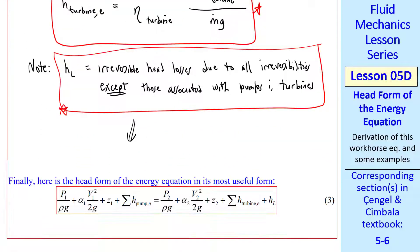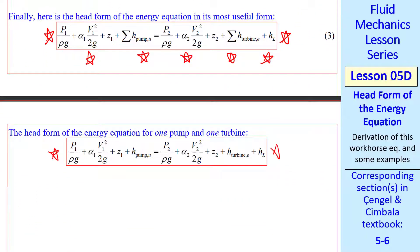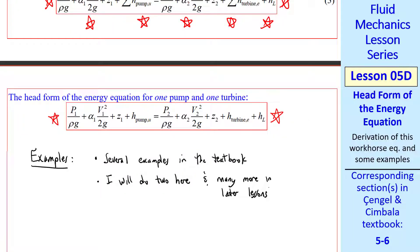Putting all this together, we get the final form of the head form of the energy equation in its most useful form, which I'll call equation 3. I'll put lots of stars around this equation. This is our workhorse equation for most of our analyses that we'll do from now on. I've also rearranged so that we have the inlet on the left and the pumps, and then the outlet and the turbines on the right, as well as the irreversible head loss. If you only have one pump and one turbine, you get this form, which is actually the one we'll most often use. Now we're ready for some example problems. There are several examples in the textbook that you should study. I'll do two examples here, and many more in later lessons.